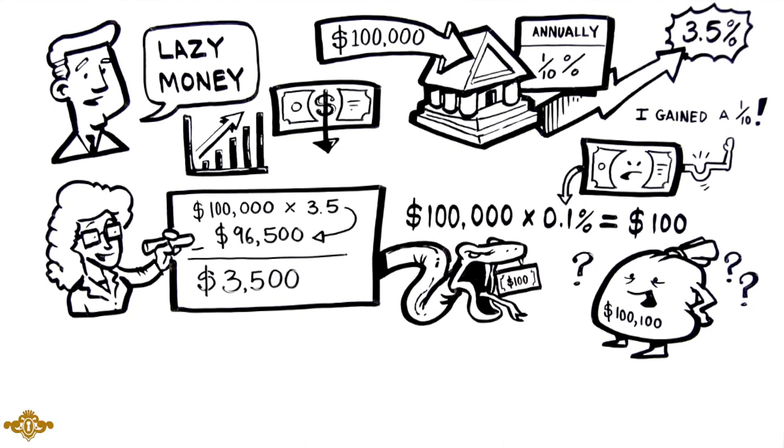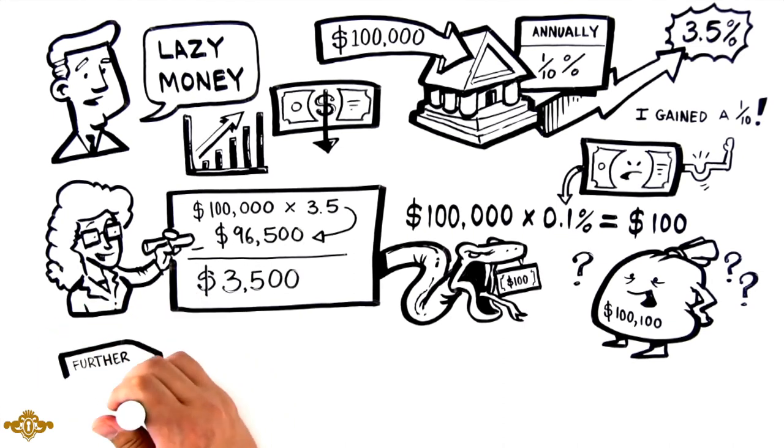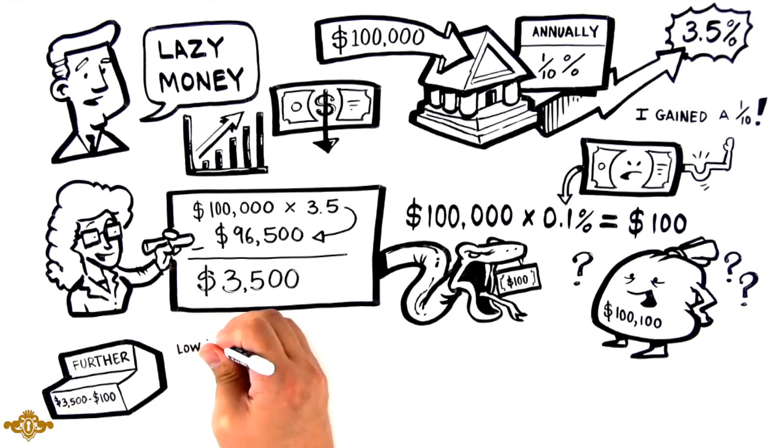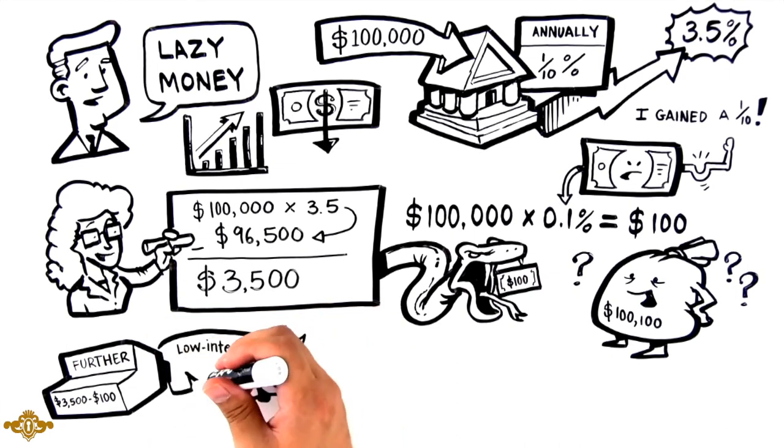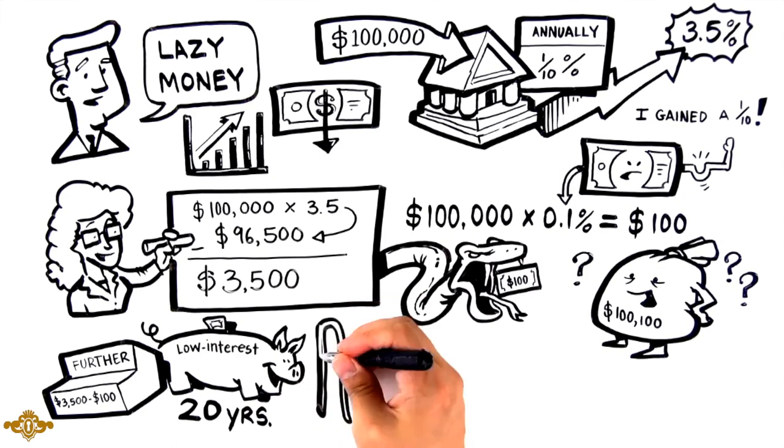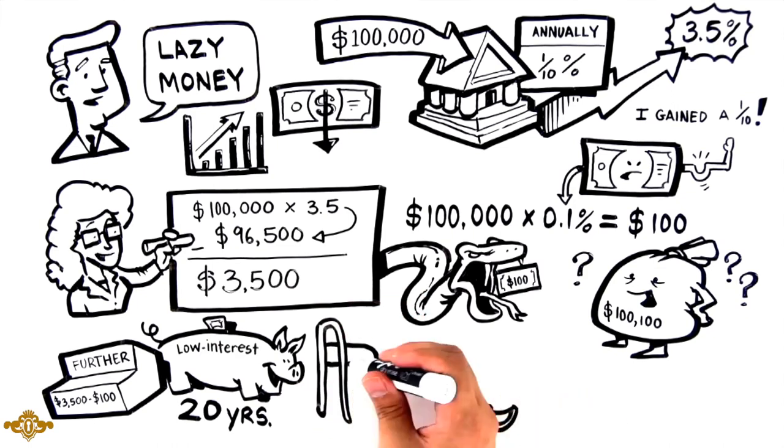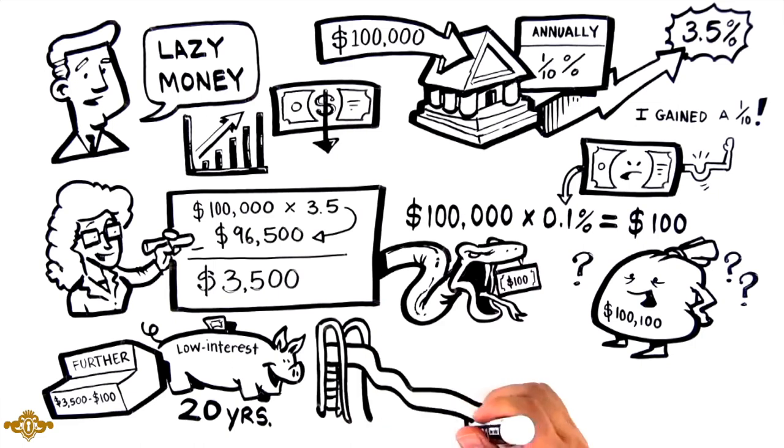Does that sound like your money is working for you? Taking it a step further, imagine if you left that same money in a low-interest-bearing account for over 20 years. In year one, your money already loses $3,400 in purchasing power, and as time goes on, you really start to feel the impact of inflation.